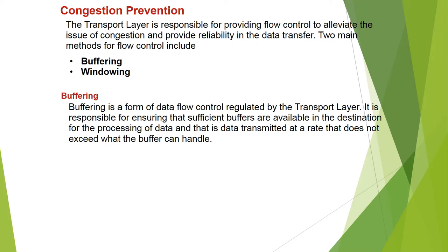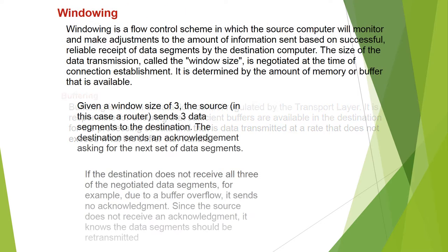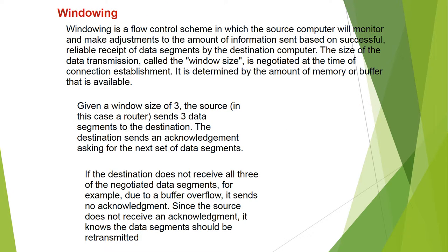Buffering is a form of data flow control regulated by the Transport layer. It is responsible for ensuring sufficient buffers are available at the destination for processing data, and that data is transmitted at a rate that does not exceed what the buffer can handle. Windowing is a flow control scheme in which the source computer monitors and adjusts the amount of information sent based on successful receipt of data segments by the destination. The window size is negotiated at connection establishment and determined by available memory or buffer.